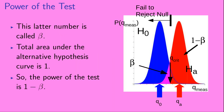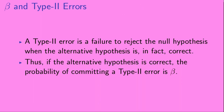This latter quantity — the purple area — is called beta. Since the total area under the alternative hypothesis curve is 1, the power of the test (the red area) is 1 minus beta. A type 2 error is a failure to reject the null hypothesis when the alternative hypothesis is in fact correct. So if the alternative hypothesis is correct, the probability of committing a type 2 error is beta.